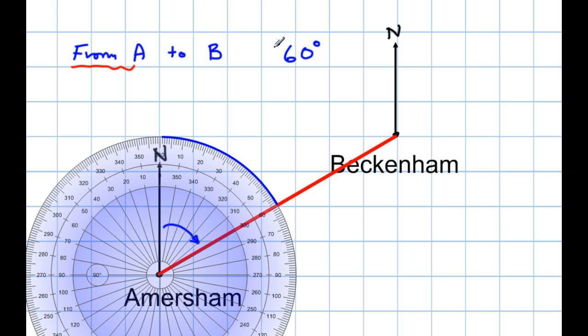We generally, if it's only got two figures, put another 0 in front because we want to make it a three-figure bearing. So, that's the direction I must travel. I must turn 60 degrees from north to face Beckenham. Let's just get rid of that protractor.